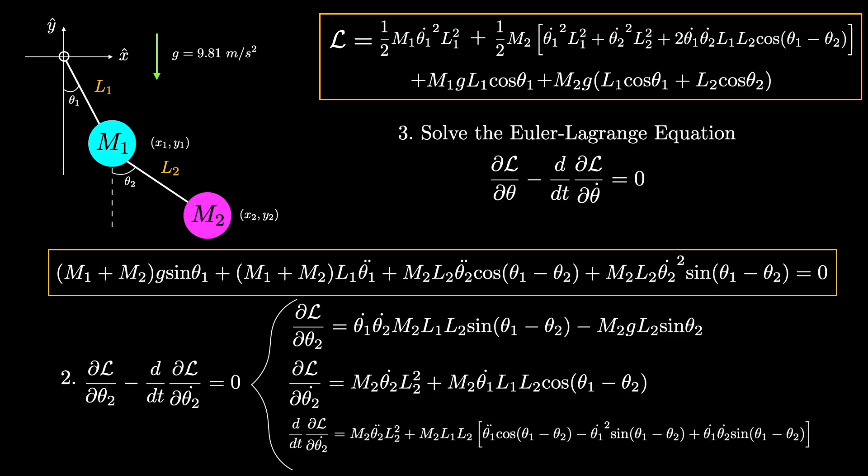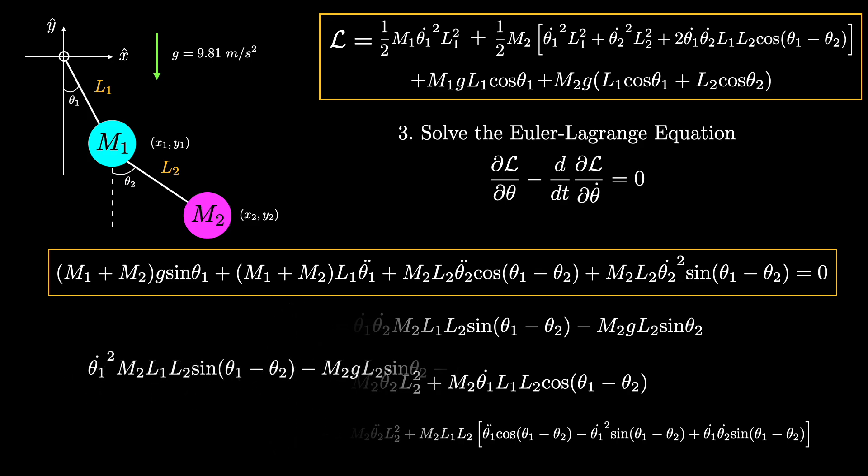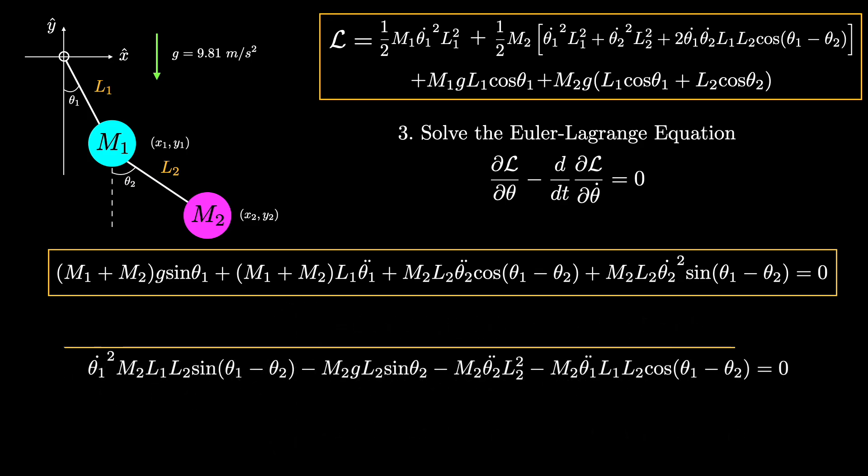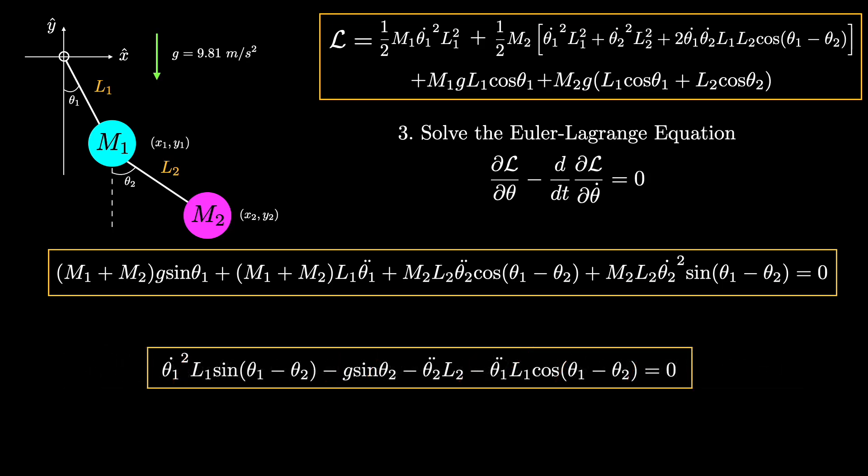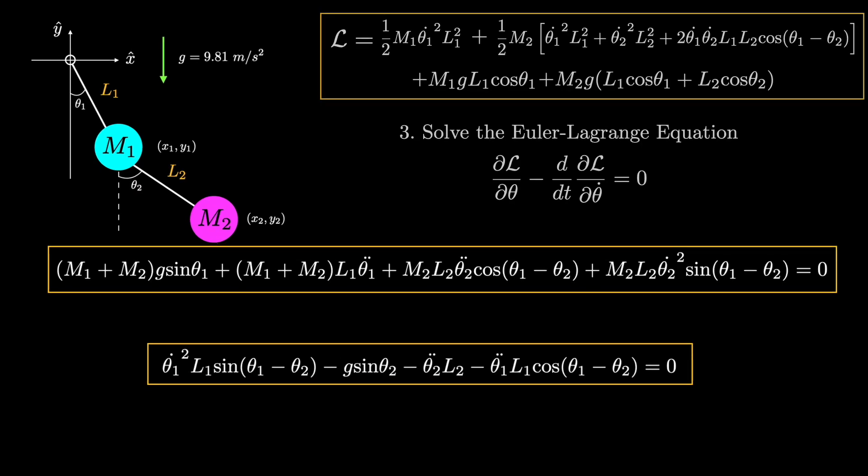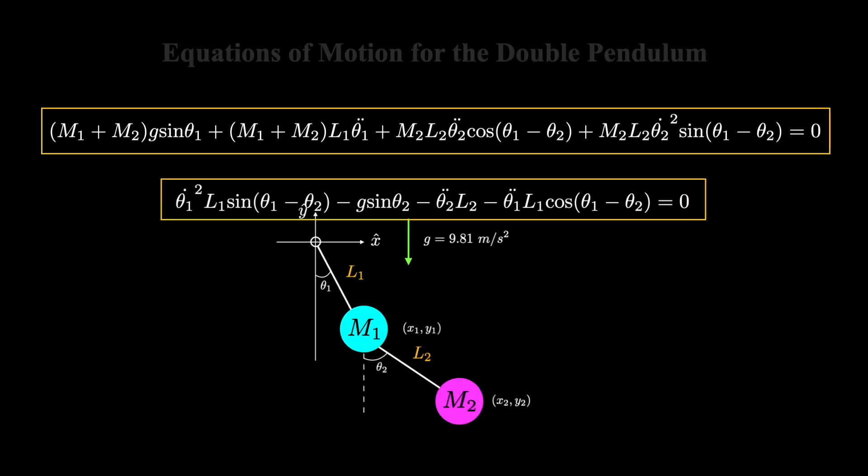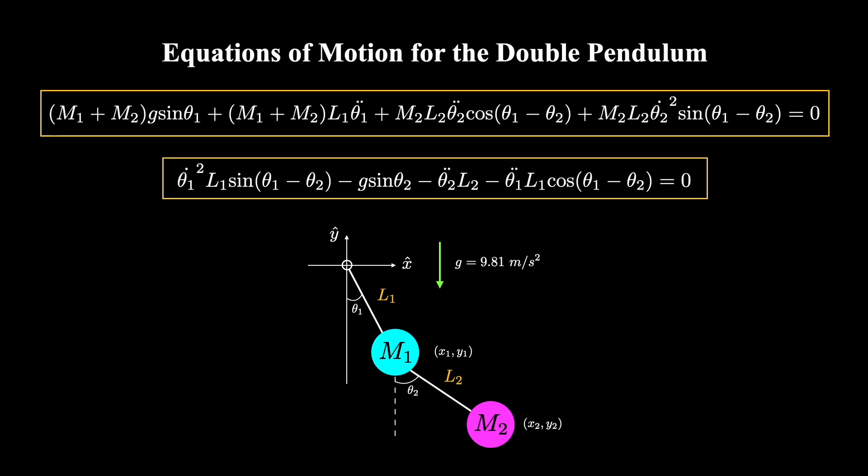Again, we subtract the bottom equation from the top equation and further simplify by crossing out L2 and all the M2s. So our entire solution consists of these two equations. These are the equations of motion that describe how the trajectory of the double pendulum will evolve over time. Now these equations cannot be solved analytically, but you can code them up and solve them numerically. So let's do that and see what the motion looks like.